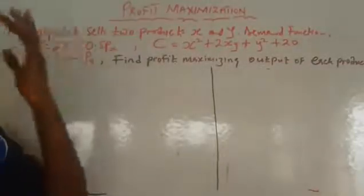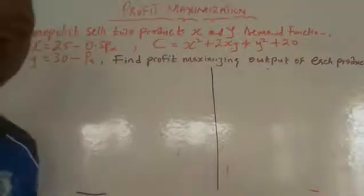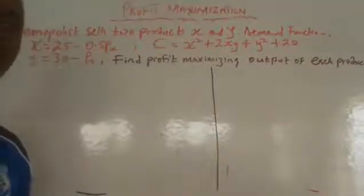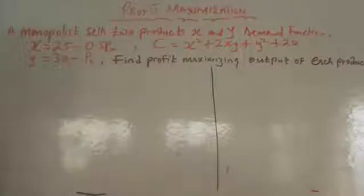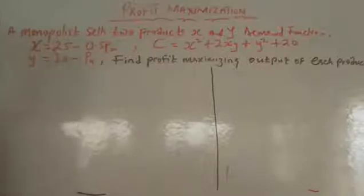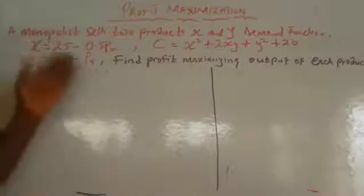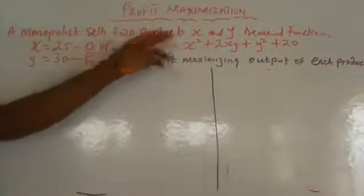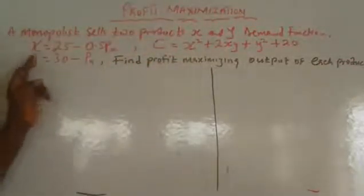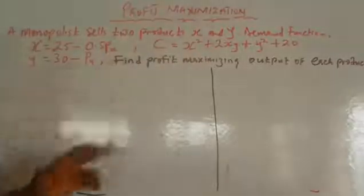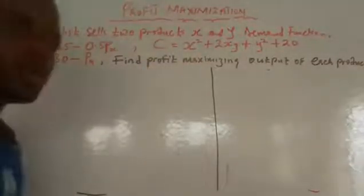In this video, we are going to be looking at profit maximization in a monopoly or monopolistic market, particularly when two commodities are produced. We are looking at a situation whereby a monopolist is producing two different products — at what point will he make the highest profit? That is, how many units of commodity X and how many units of commodity Y will he produce to make the highest profit? We are asked to find the profit-maximizing output of each product.